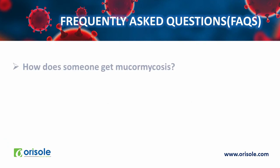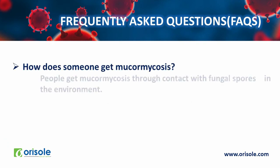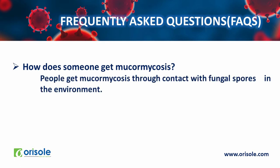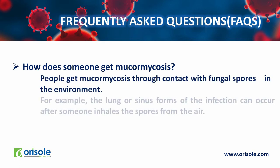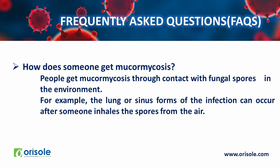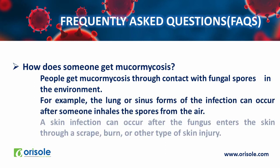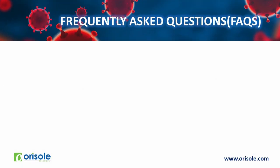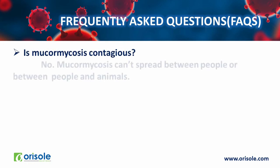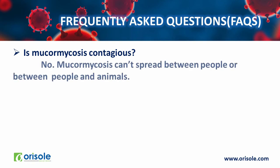How does someone get mucormycosis? People get mucormycosis through contact with fungal spores in the environment. For example, the lung or sinus form of the infection can occur after someone inhales spores from the air. A skin infection can occur after the fungus enters the skin through a scrape, burn or other type of skin injury. Is mucormycosis contagious? No, mucormycosis is not contagious. It cannot spread between people or between people and animals.